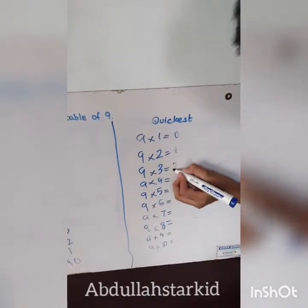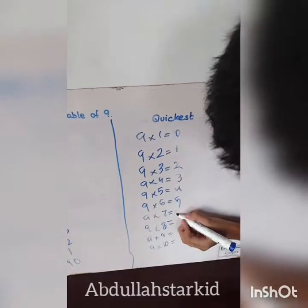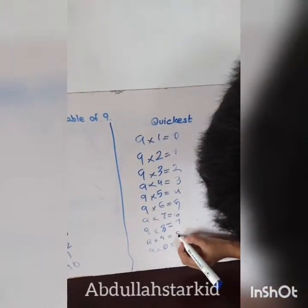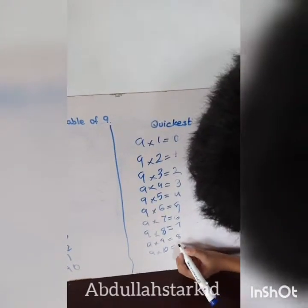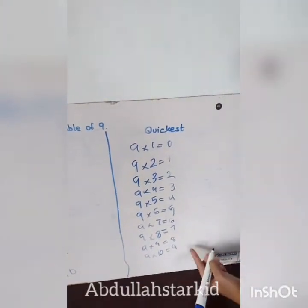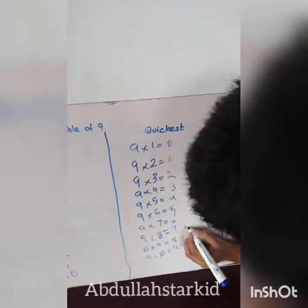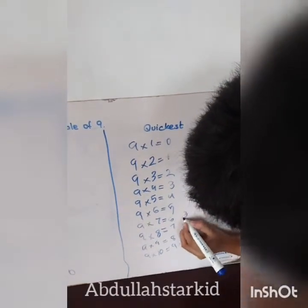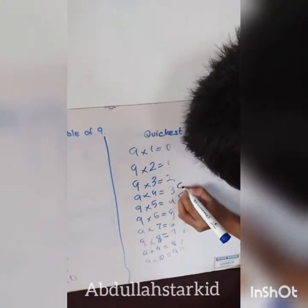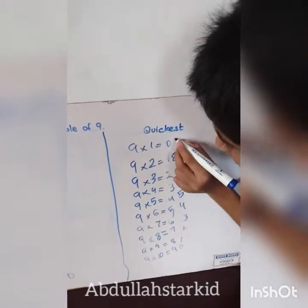Now let's start. Write the first column counting forward: zero, one, two, three, four, five, six, seven, eight, nine. Then on the other side, write the second column backwards: nine, eight, seven, six, five, four, three, two, one, zero.